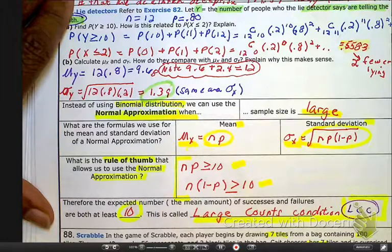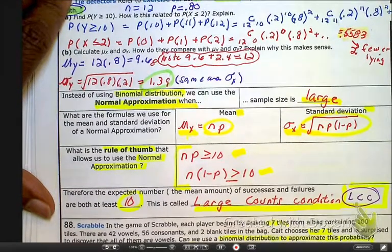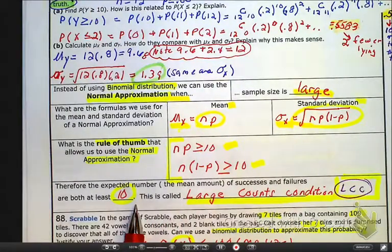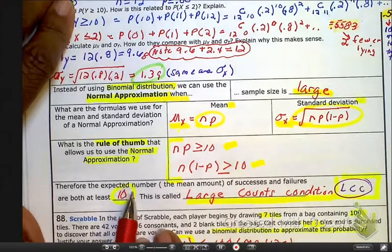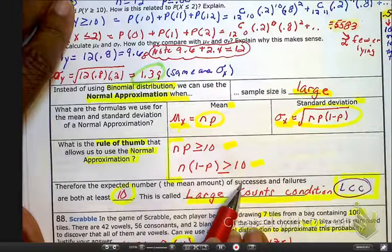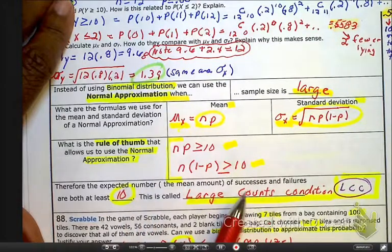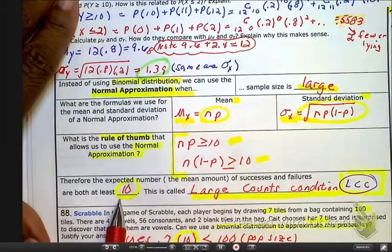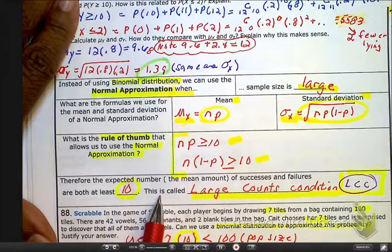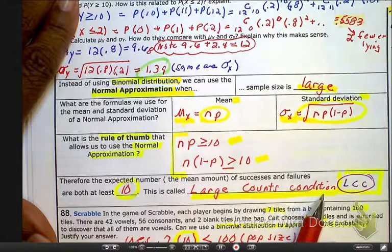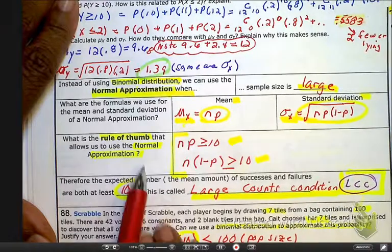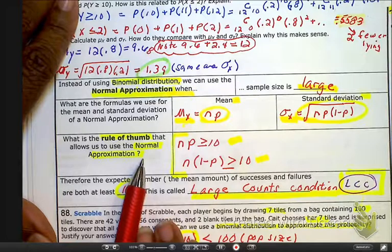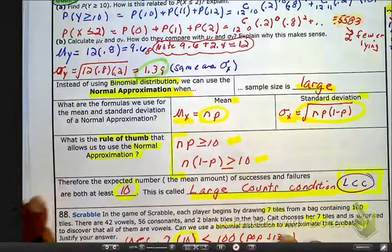Okay, so here, that tells us that if we have the expected number of successes, which is n times whatever p is, and the expected number of failures, which is n times p-naught, if it's greater than or equal to 10, so at least 10, okay, we know the large count condition has been met. We call it LCC. And then therefore, yes, we can say, we can use a z-score because we can establish that it is approximately normal.